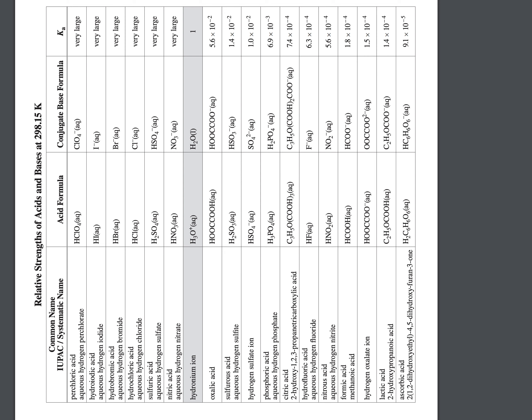The strongest acids are going to be in the top left-hand corner when you're looking at the table sideways. Technically the strongest acid is actually the hydronium ion. Everything above the hydronium ion represents our six strong acids that we learned about last year — they will become hydronium ions 100% when they dissolve in water.